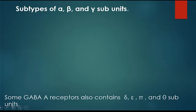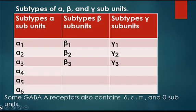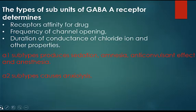There are several subtypes of alpha, beta, and gamma subunits: 6 subtypes of alpha, 3 subtypes of beta, and 3 subtypes of gamma subunit. Some GABA-A receptors also contain delta, epsilon, pi, and theta subunits. The types of subunits determine the receptor's affinity for agonist, frequency of channel opening, duration of conductance of chloride ions, and other properties.